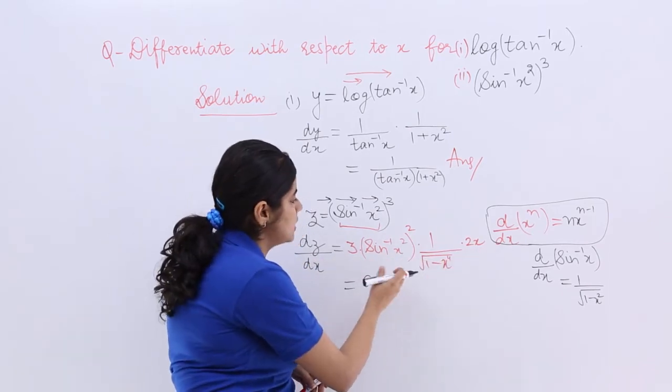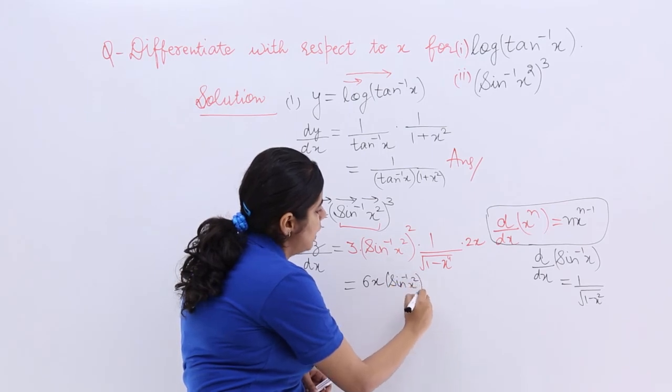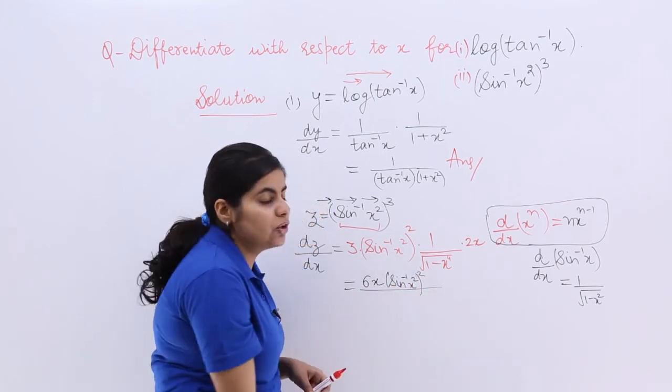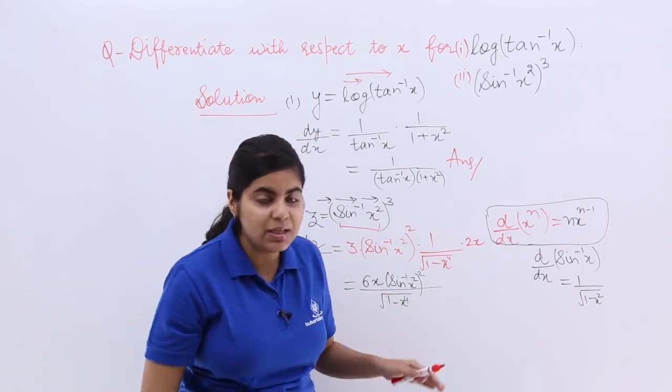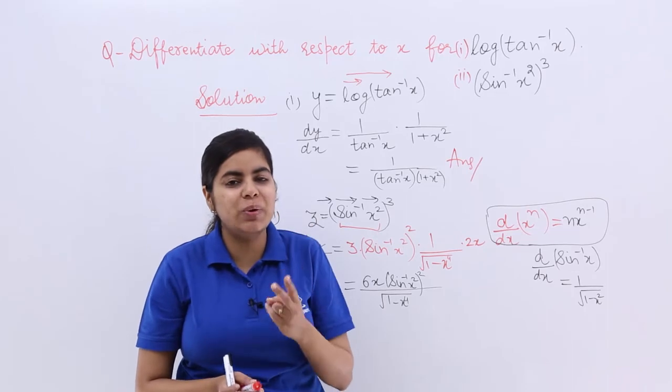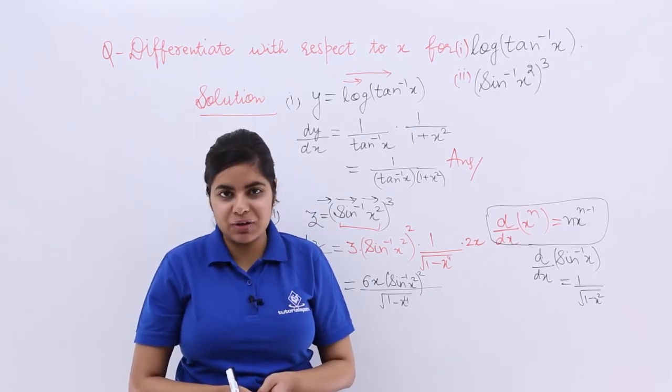Then the rest thing should be copied. Sine inverse x square whole square. And in the denominator, you should have nothing but 1 minus x raised to the power 4. So that means what? That means we have solved the two questions based on the differentiation of inverse trigonometric functions.